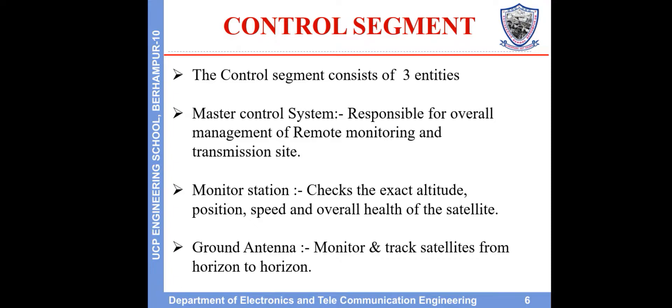Control segment. The control segment consists of three entities: the master control system, responsible for overall management of remote monitoring and transmission sites; the monitor station, which checks the exact altitude, position, speed, and overall health of the satellite; and ground antennas, which monitor and track satellites from horizon to horizon.